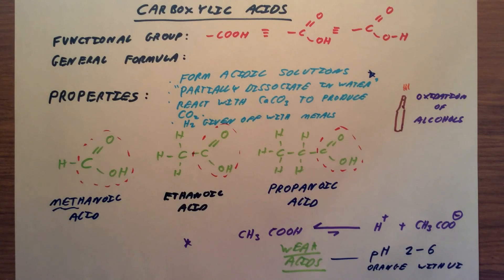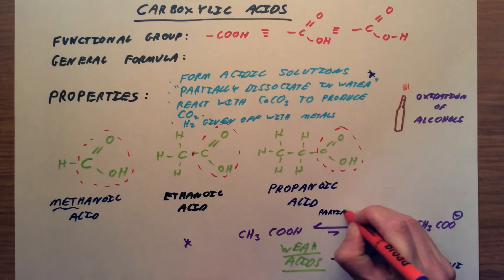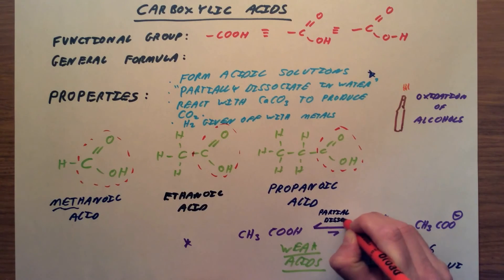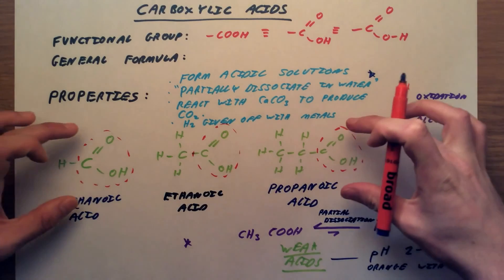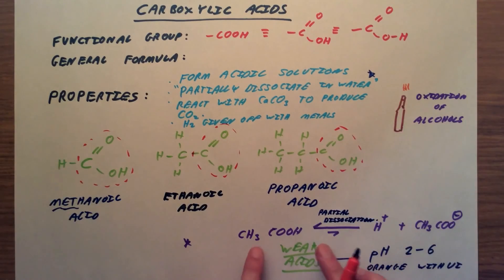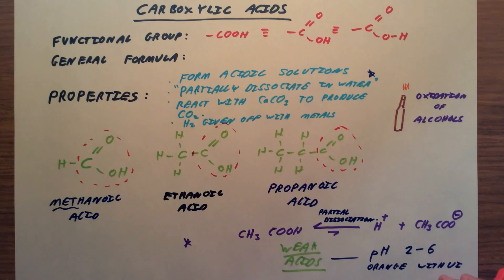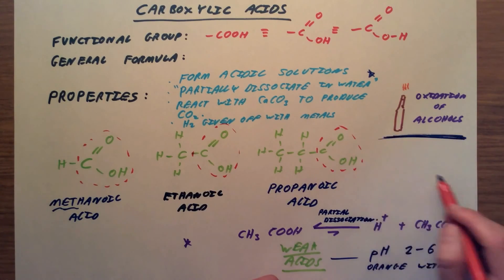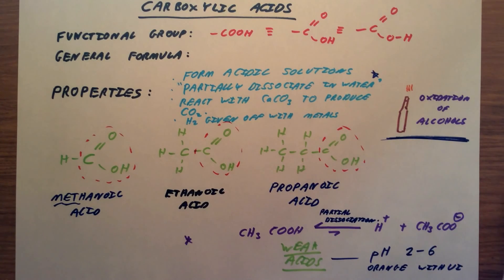The reason is we only get partial dissociation. Make sure you can draw and name these three structures. Remember that weak acids only partially dissociate in aqueous solution — they only separate a little bit, so they are weakly acidic with higher pH values than other acids. Carboxylic acids are formed from the oxidation of alcohols, and ethanoic acid in particular is one of the main components in vinegar.